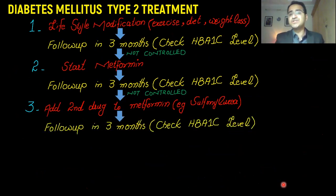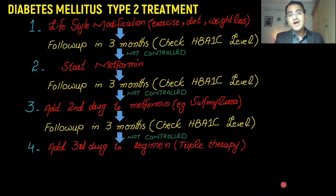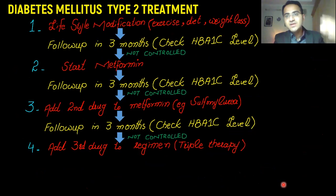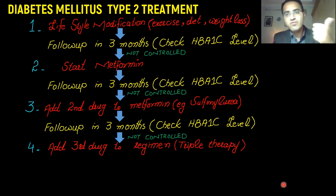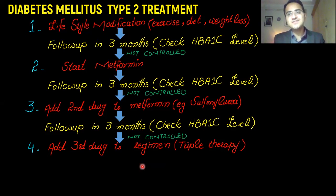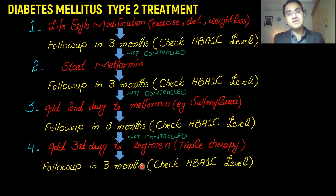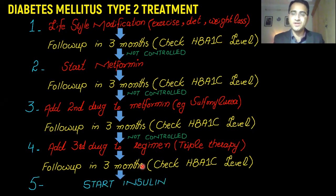After adding a second drug, you ask the patient to return in three months and check HbA1c. If it is still greater than seven percent, you move to fourth-line therapy — you add a third drug to the regimen, called triple therapy. You can pick any of the above drugs — DPP4 inhibitors or SGLT2 inhibitors — according to the patient. After another three months, if HbA1c is still not under control, you move to the last-line therapy and start insulin.